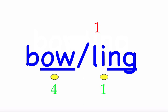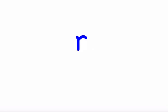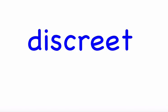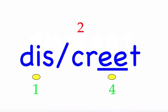Row nine. The first word is 'discreet.' It is important to be discreet. First syllable 'dis' — three sounds, D-I-S. Second syllable 'creet' — four sounds, C-R-E-E-T. Mark the word. Discreet.